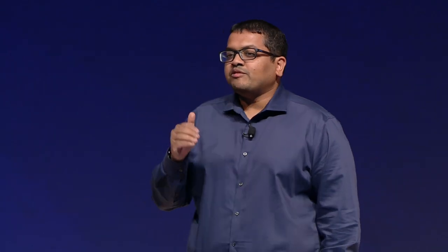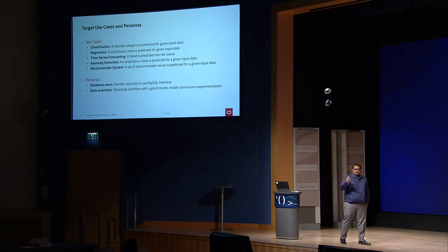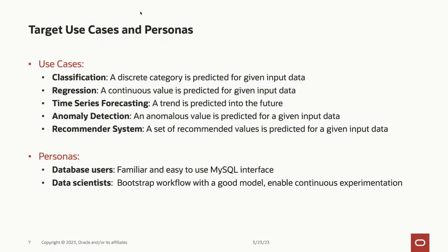The next is regression — for example, when you are trying to predict a continuous value, such as the temperature during a day. We support that. Next is time series forecasting, where you have historical data and want to predict the trend in the future. Time plays a very important factor. We support both univariate and multivariate forecasting, where you have external variables you can feed to your model to predict the trend.